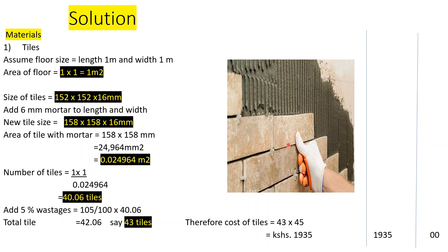We add 6 mm mortar joint to the length and the width of the tile — that means 3 mm on each side along the length, and 3 mm on each side along the width. So the new tile size including mortar is 158 × 158 × 16 mm.